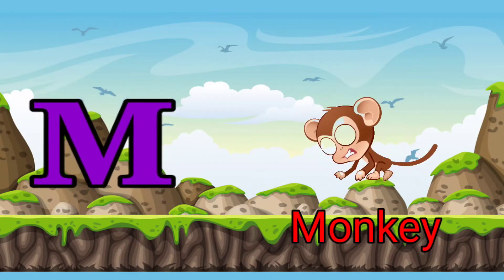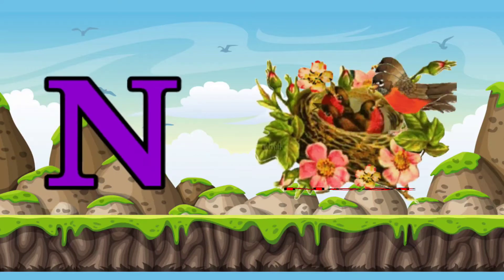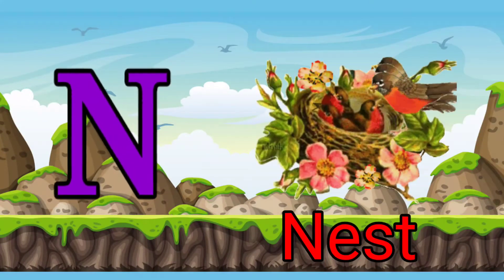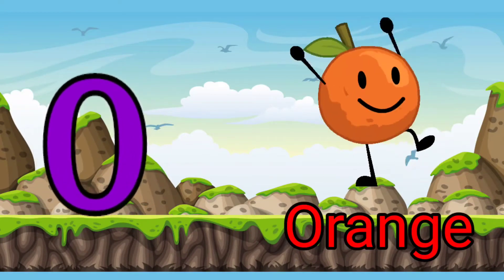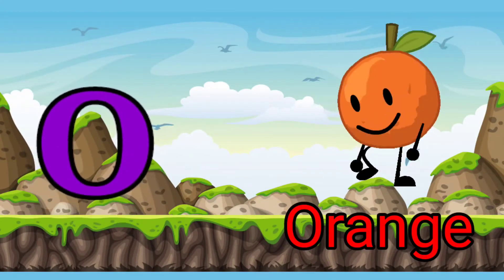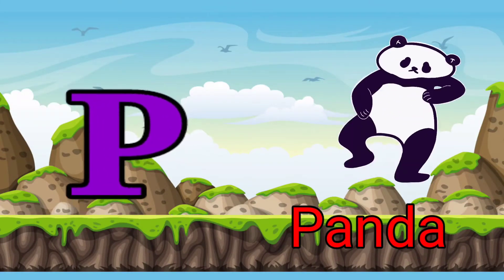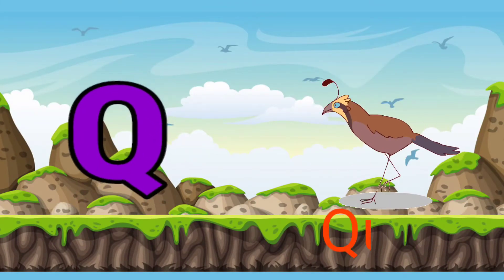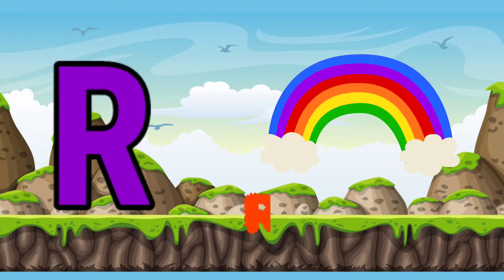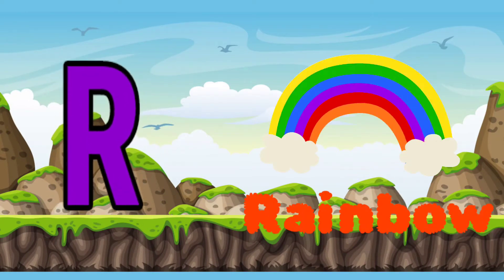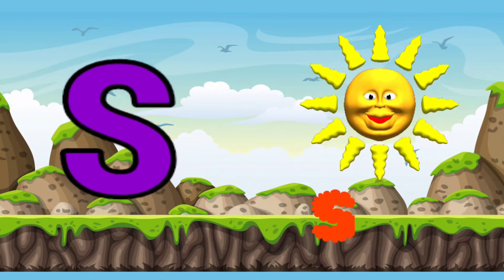M for monkey, N for nest, O for orange, P for panda, Q for quail, R for rainbow.